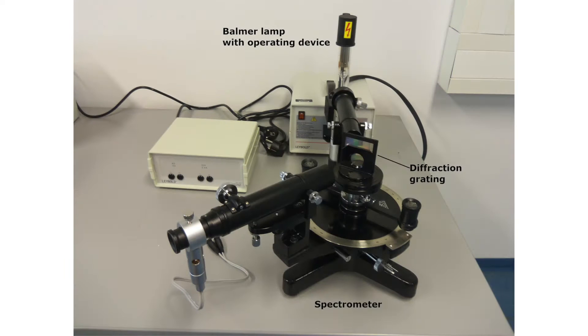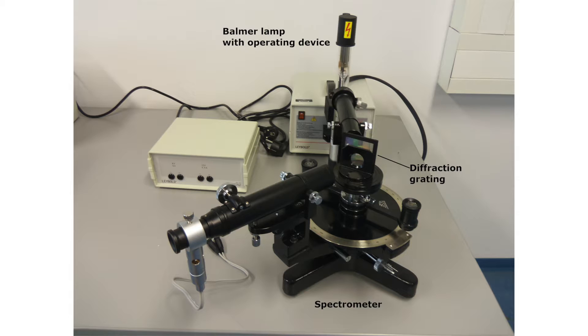The experimental setup comprises the frame of the spectrometer with the angular scale, the telescope with the operating unit for the lighting, a slit tube with the attached second-resolution slit, the mercury lamp with the operating unit, a Balmer lamp with the operating device and a grating.